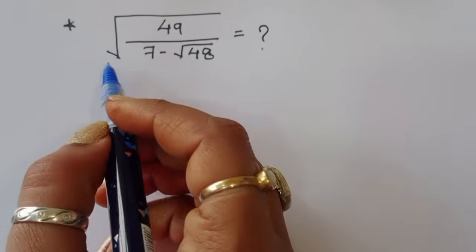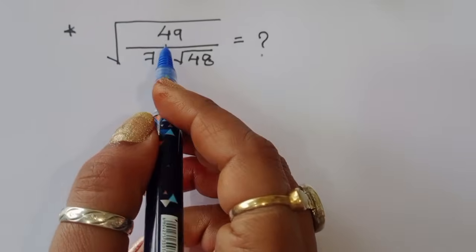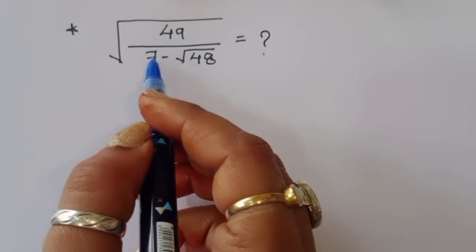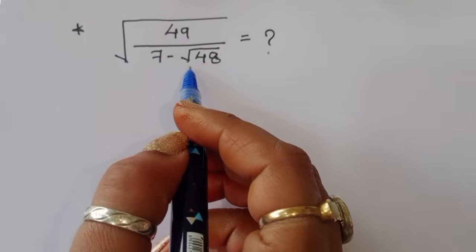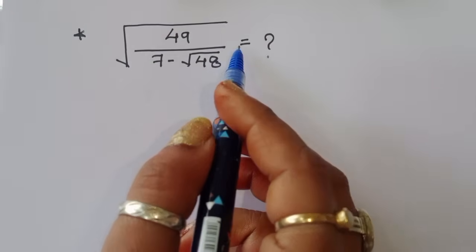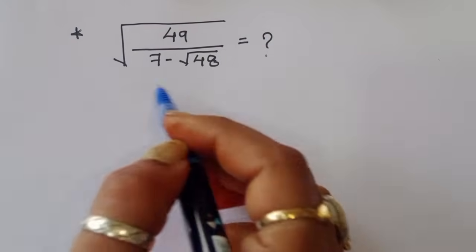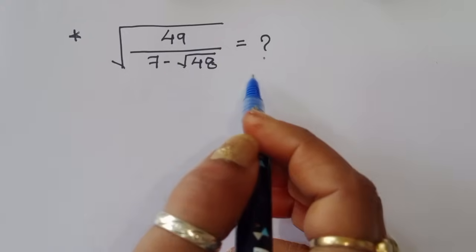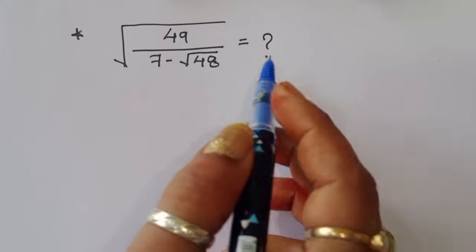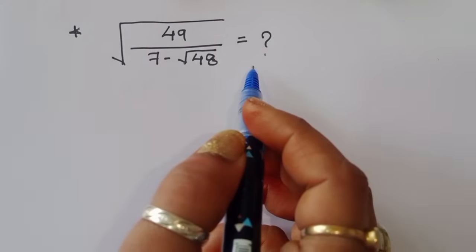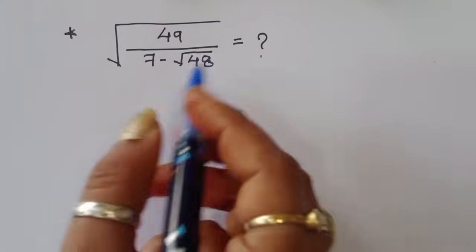The question is: given square root of 49 divided by 7 minus square root of 48, what is the value? We have to find out the value of this term. Let's see the solution.